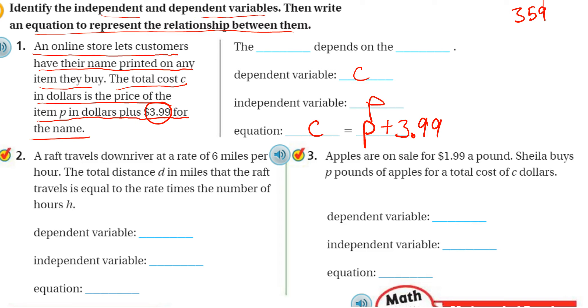and P, the price of the item that I buy, is going to be my independent variable. Because the cost depends on what item I buy, and how much that item costs. So the total cost depends on the price of the item.